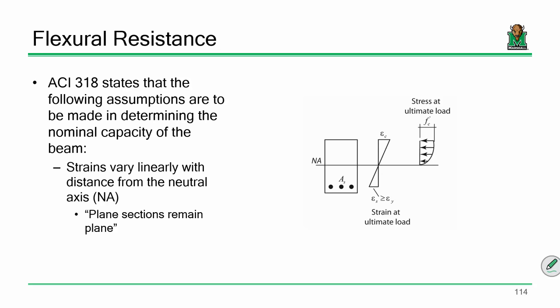Going back to ACI 318 — it's in chapter 10 — ACI states the following assumptions for determining the nominal capacity of a beam. One thing we didn't discuss was strains. There's the concept of stress and strain, and they're related. When calculating strains, ACI assumes strains vary linearly from the neutral axis — in other words, plane sections remain plane. So while we get a nonlinear stress distribution, for strains we assume linear variation.